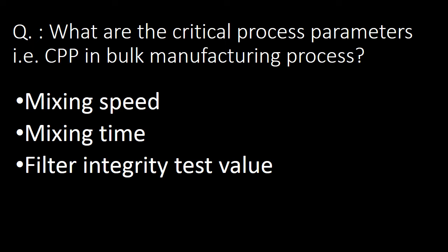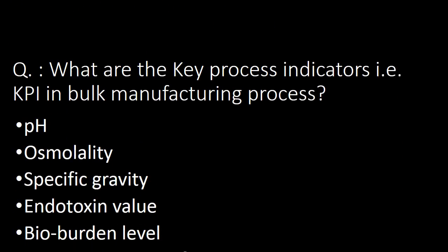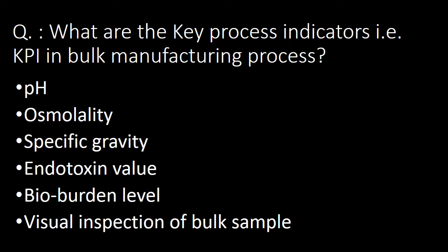What are the critical process parameters (CPP) in bulk manufacturing process? CPPs in bulk manufacturing process are mixing speed, mixing time, and filter integrity test value. Additional CPPs can also be involved as per the batch manufacturing process requirements.